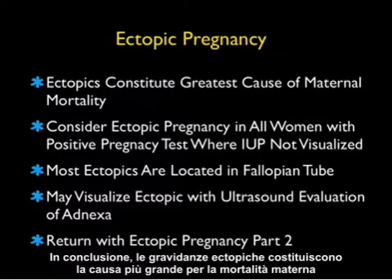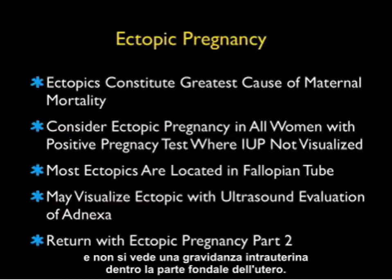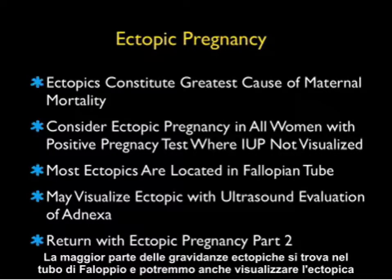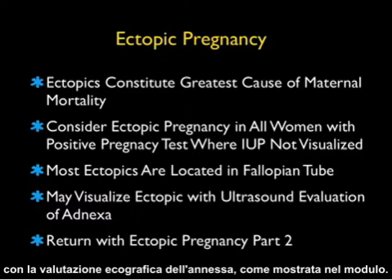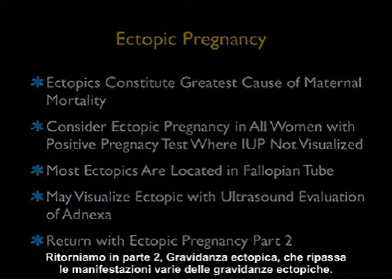In conclusion, ectopic pregnancies constitute the greatest cause overall of maternal mortality, and we must consider an ectopic pregnancy in all women with a positive pregnancy test where an intrauterine pregnancy is not visualized within the fundal part of the uterus. Most ectopic pregnancies are going to be located in the fallopian tube, and we may actually visualize the ectopic with ultrasound evaluation of the adnexa as shown in this module. We'll return with ectopic pregnancy part two, which goes over the varied manifestations of ectopics.